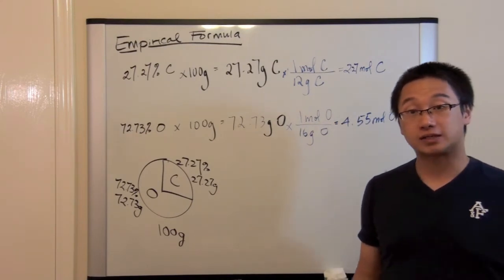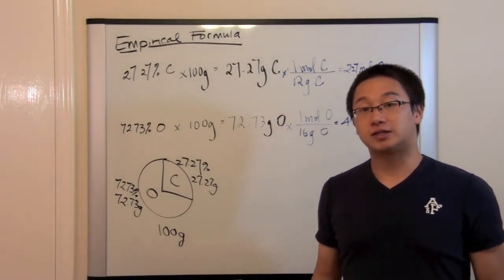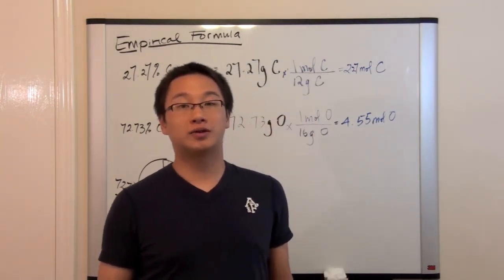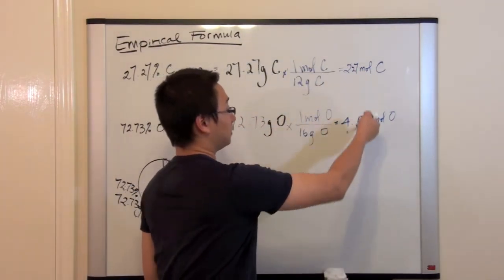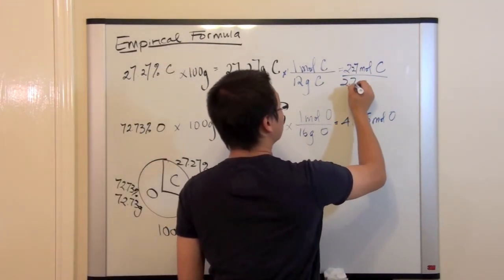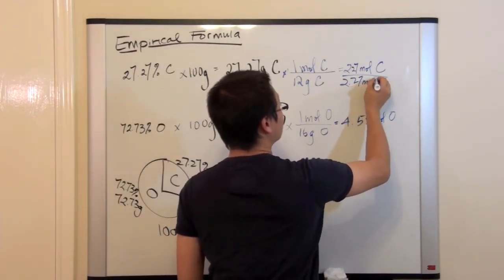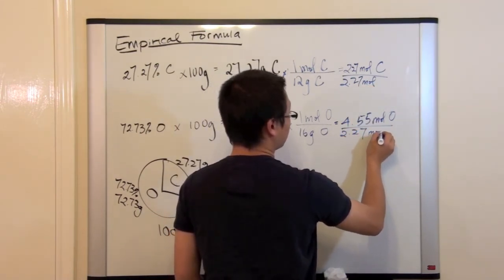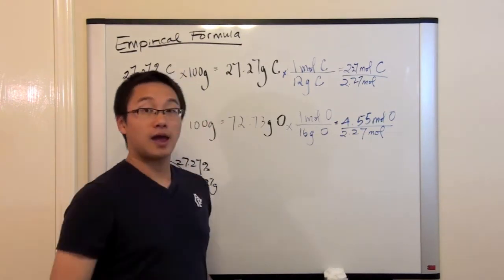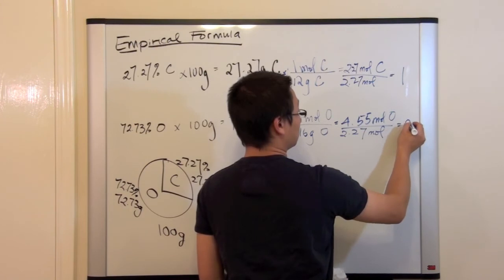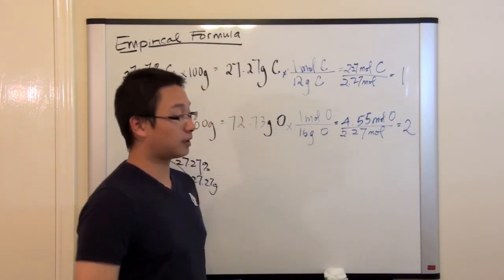Now we have the two quantities. And what do we do next? What we would do next is to try to compare. The way we compare is that we are going to divide by the smallest number of these two. So since this is the smallest number, so we would divide that. And what you would get is this.